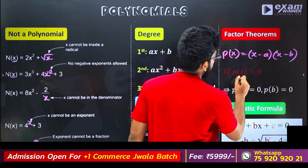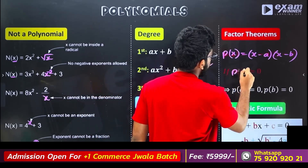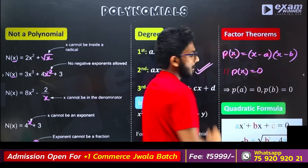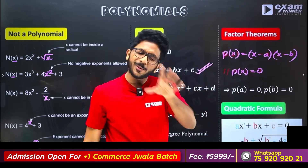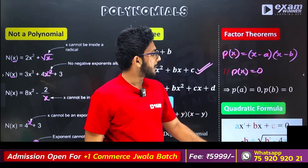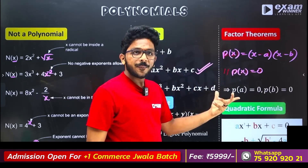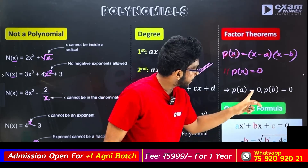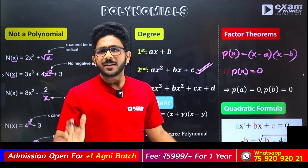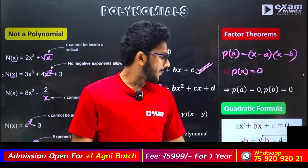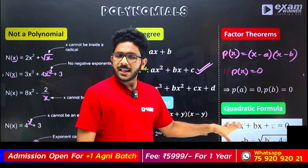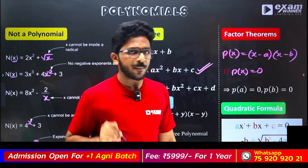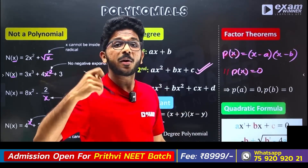What we have learned is P of x equals P of x. P of x is equal to zero when x is equal to a and x is equal to b. That's why P of x equals zero. Then x is equal to a and b. If you study this form, you will learn from the second degree.